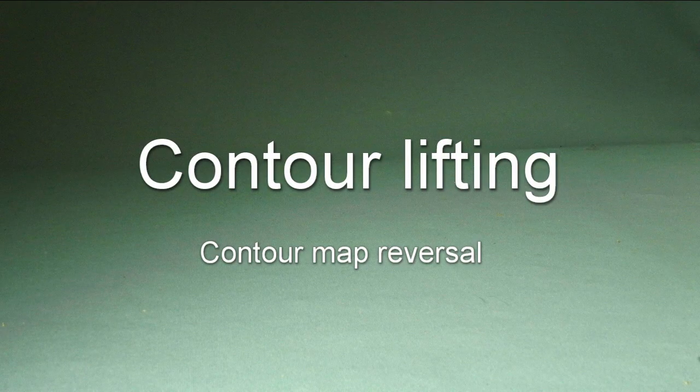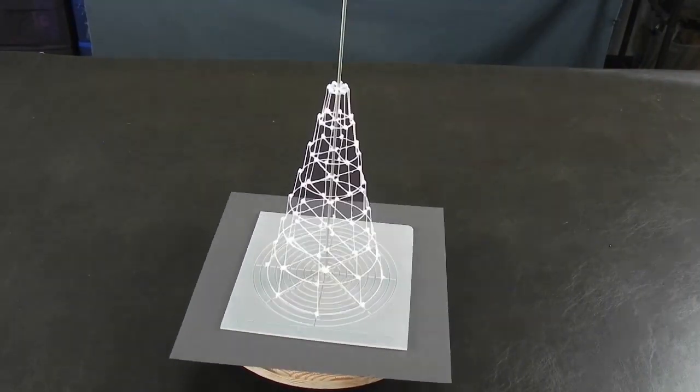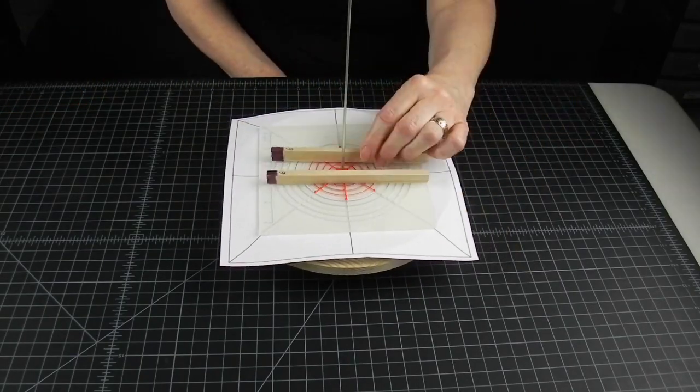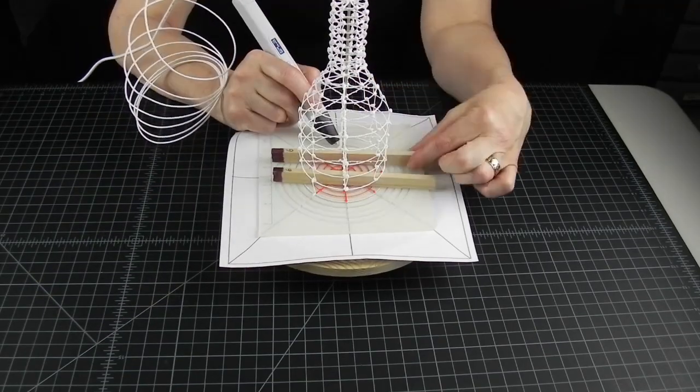Contour lifting is a way of sculpting a form by reversing a contour map of the object. You just put the elevation back into it. You don't need the parallel planes to be sitting directly on top of each other to define a shape.